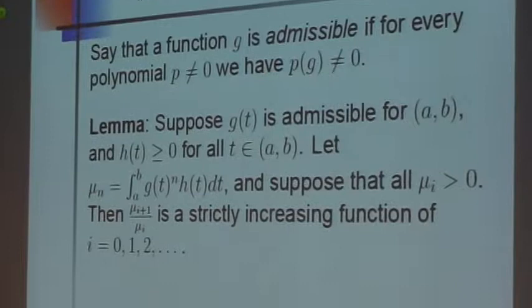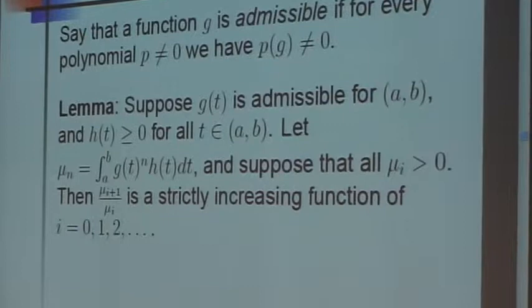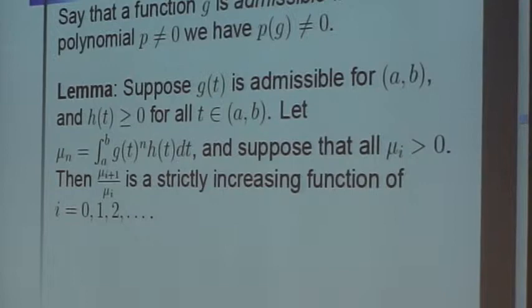Lemma: Suppose g of t is admissible for the interval (a, b), and h of t is any non-negative function for all t in (a, b). Let mu sub n be the integral of g of t to the n times h of t dt, and suppose that all mu i's are greater than 0. Then mu i plus 1 over mu i is a strictly increasing function of i equals 0, 1, 2, etc.